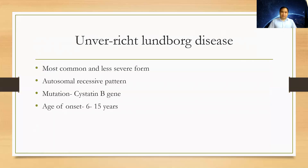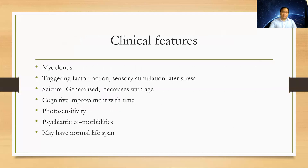Unverricht-Lundborg disease is the most common and less severe form with a good prognosis compared to other types of PME. It follows an autosomal recessive pattern with mutation in the cystatin B gene (EPM2A), with age of onset 6 to 15 years. Clinical features include myoclonus triggered by action, touch, sensory stimuli, and sometimes stress, as well as generalized seizures.